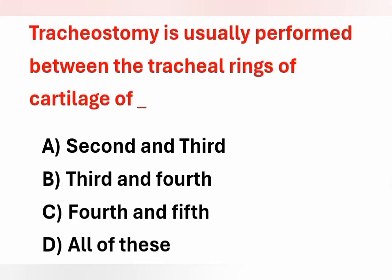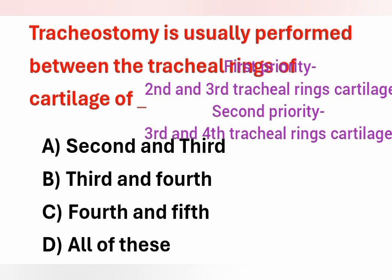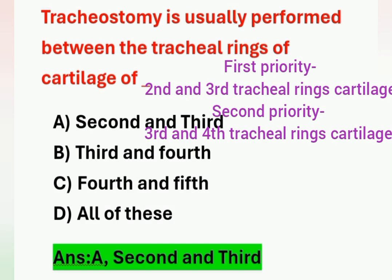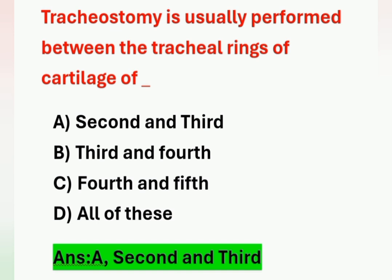Next question: tracheostomy is usually performed between the tracheal rings of cartilage of which option? Option A – second and third. Option B – third and fourth. Option C – fourth and fifth. Option D – all of these. Tracheostomy is usually performed between the second and third tracheal ring cartilage; this is the most common site. The second priority site is between the third and fourth tracheal ring cartilage.